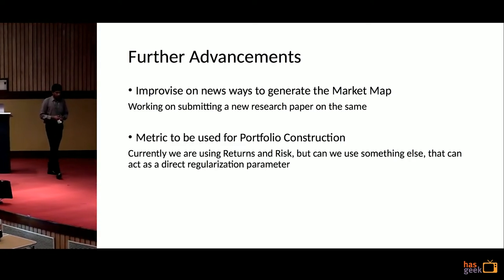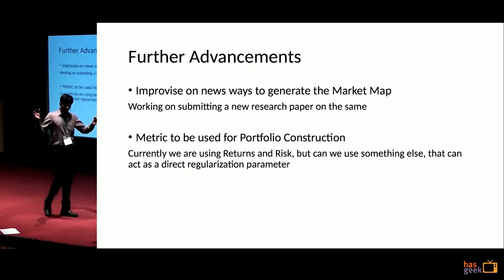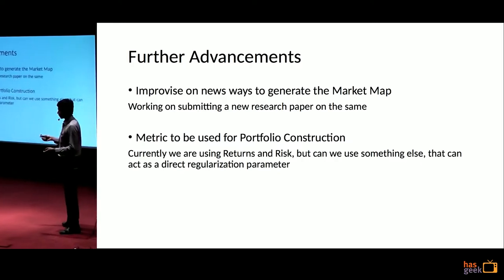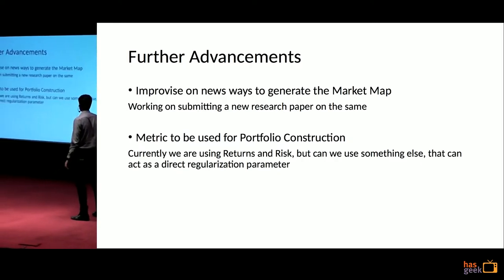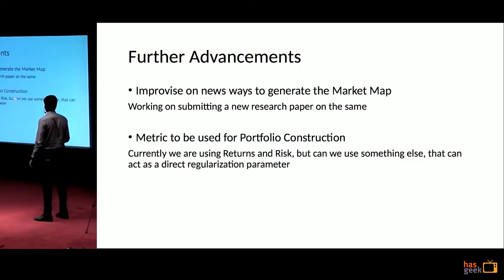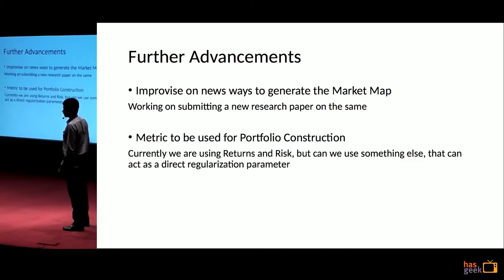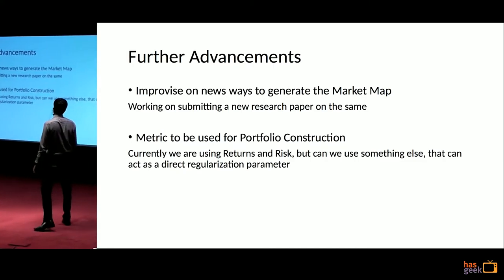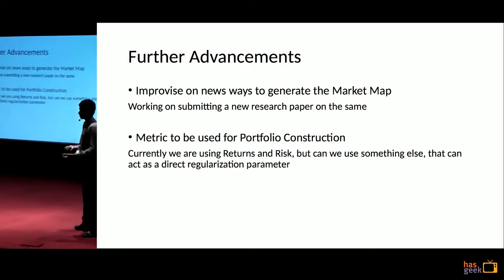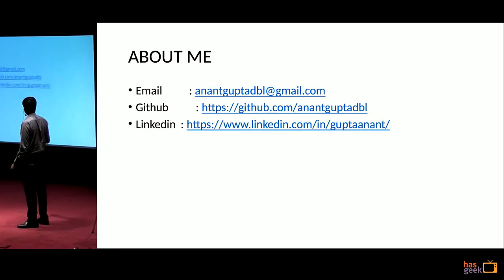Further advancements: the market map — we want to condense all that information to a smaller dataset. This is a very challenging problem and we are writing a paper on it, to be published soon. The second area is the metric used for portfolio construction. Currently we use returns and risk, but can we use something else — some other regulation parameters? These are things we are currently working on.